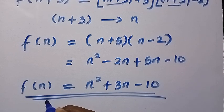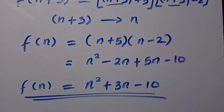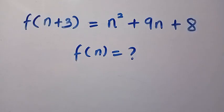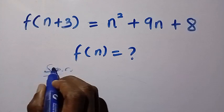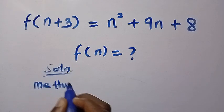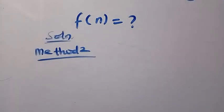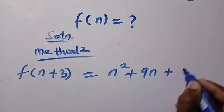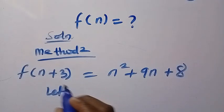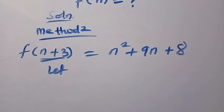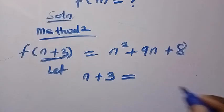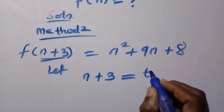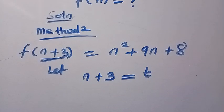The next thing is to see the second method. Welcome back to Method 2. Let's solve this using another approach different from the first one. Here is Method 2: suppose I let the domain from f of n plus 3 — which gives n squared plus 9n plus 8 — and let n plus 3 equal another letter. Suppose I let n plus 3 equal t, for instance. Both t and n are members of the real numbers.